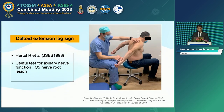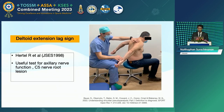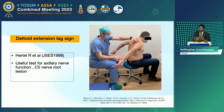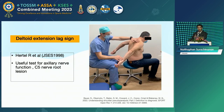The deltoid lag sign, proposed by Hertel in 1998, is useful for testing the deltoid and axillary nerve function, which could also be affected by a C5 nerve lesion. The test is done with the arm flexed at the elbow maximally extended by the examiner. The patient is asked to hold the position, and the lag in degrees is recorded.